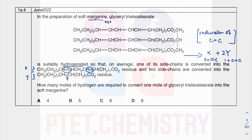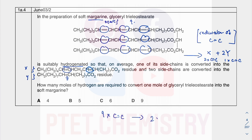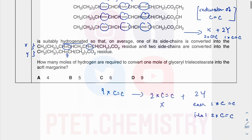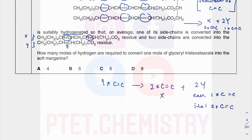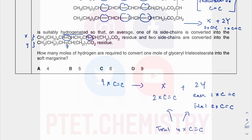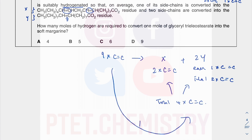At the start, counting all double bonds: 1, 2, 3, 4, 5, 6, 7, 8, 9 — so nine C=C double bonds initially. After the reaction you have: 1 residue of X with 2 C=C bonds, plus 2 residues of Y each with 1 C=C bond, giving a total of 2 + 2 = 4 C=C double bonds. So you go from 9 to 4, losing 5 C=C double bonds.